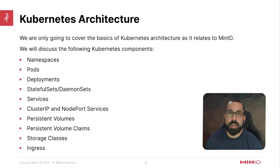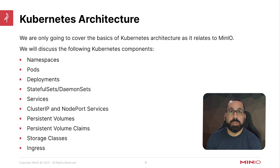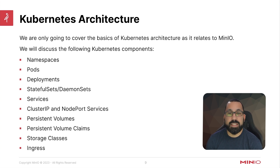In this part of the course, we're going to talk about Kubernetes architecture and cover the basics as they relate to MinIO. We're going to discuss Kubernetes namespaces, Kubernetes pods — which is the smallest individual compute unit you can run inside Kubernetes — how deployments can deploy multiple pods and manage the lifecycle of all those pods, what stateful sets and daemon sets are as a special type of deployment, and services — think of services as a load balancer within the cluster.